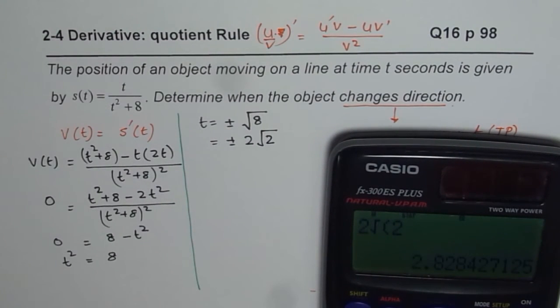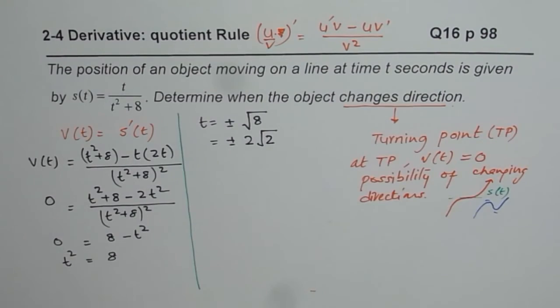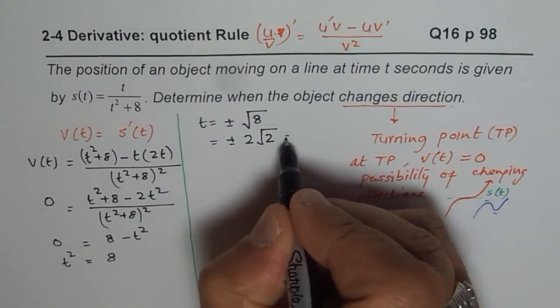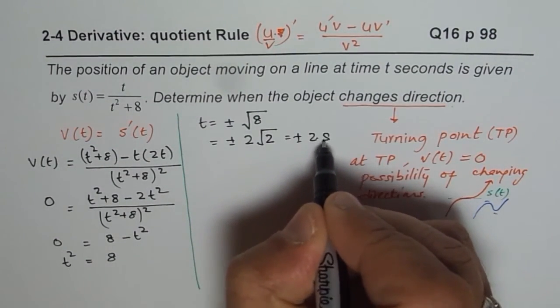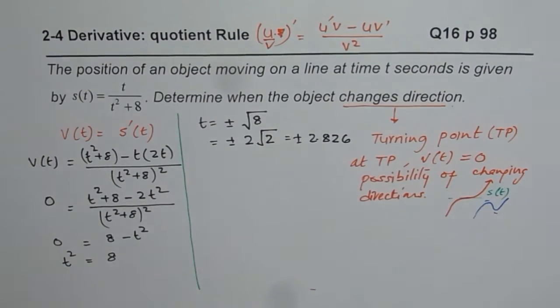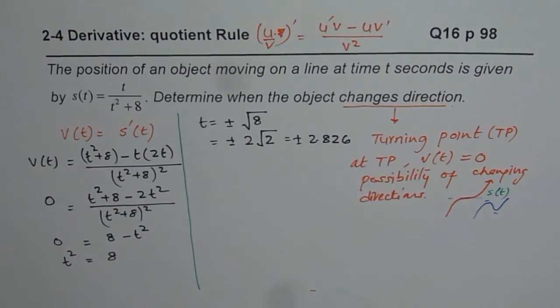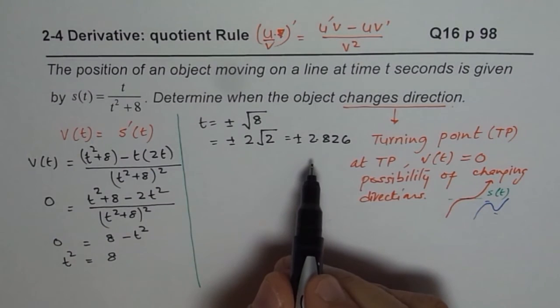Let us find the decimal value of 2 square root of 2. Decimal value is 2.828. So, which is equals to plus minus 2.828.